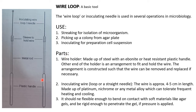About the parts of the wire loop: the first part is the wire holder, made up of steel with an ebonite or heat-resistant plastic handle. The other end of the holder has an arrangement to fit and hold the wire. The arrangement is constructed so that the wire can be removed and replaced as necessary — similar to how you open a pen to insert a new refill, the sleeves of the wire loop work the same way, allowing you to fit in a wire and even remove it.